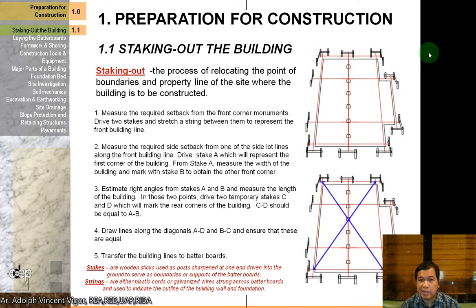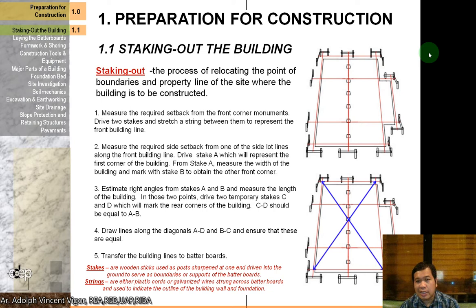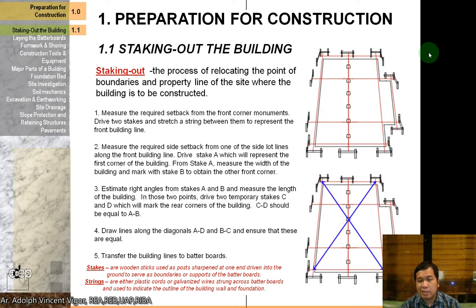The steps for staking out are: first, measure the required setback from the corner and drive stakes, stretching a string to represent the front building line. Next, measure the required side setback along the building line and drive stake A at the first corner. From stake A, measure the width of the building and mark stake B for the other front corner. Then estimate right angles from stakes A and B, measure the building length, and drive stakes C and D for the rear corners. Ensure diagonals AD and BC are equal, then transfer the building lines to the batter boards.